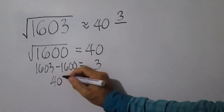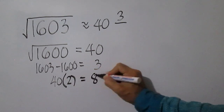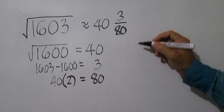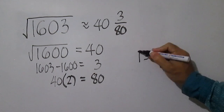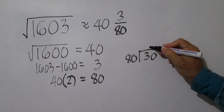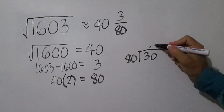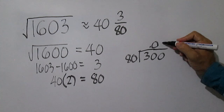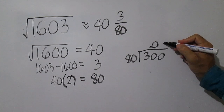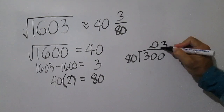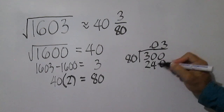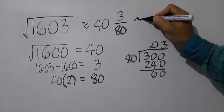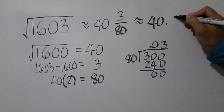Double 40: 40 times 2 equals 80. Divide 3 by 80. The square root of 1,603 is approximately equal to 40.03.